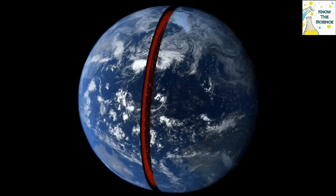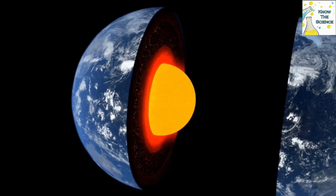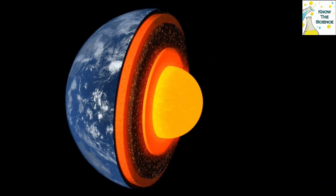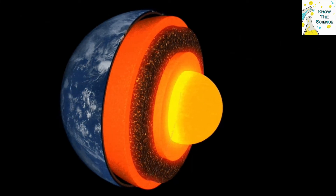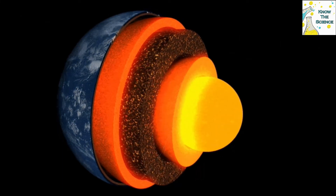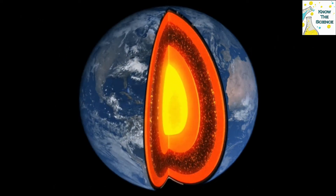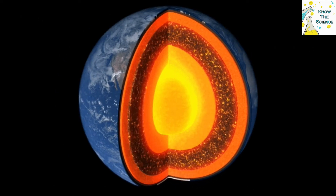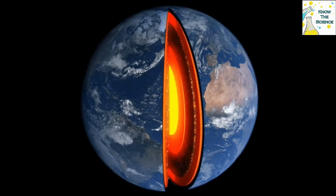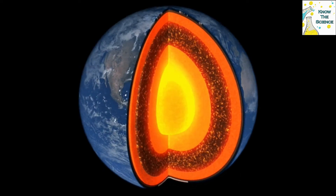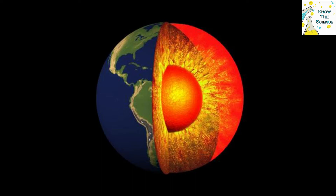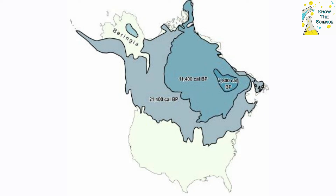One theory centers on a process known as convection occurring in the Earth's mantle. The mantle is a layer of molten rock called magma and exists between 100 to 200 kilometers below the surface of the Earth. Magma is extremely hot and constantly whirling and shifting, rising and falling, to create convection currents. Convection drags the Earth's continental plates down, which decreases the mass in that area and decreases the gravity.